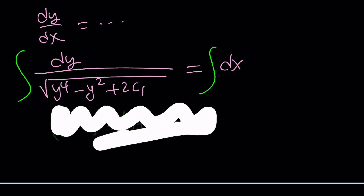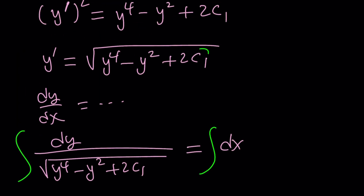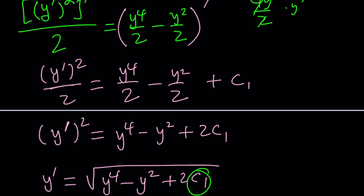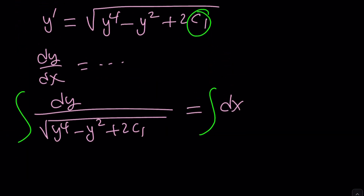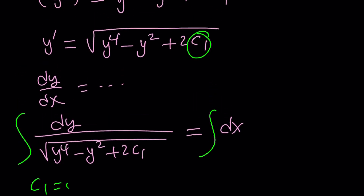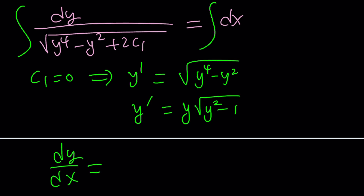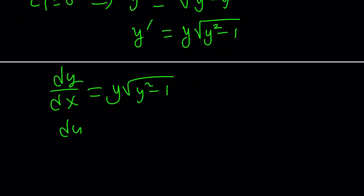Let's make an assumption to simplify: what if C₁ equals zero? In other words, we don't use a constant. If initial conditions were given, it might work out that way. Assuming C₁ equals zero, we get something super nice: y prime equals y times the square root of y squared minus 1. Writing it as dy over dx and separating variables gives dy over (y times the square root of y² minus 1) equals dx.